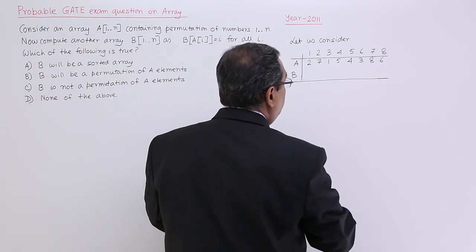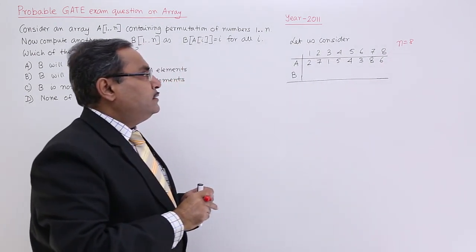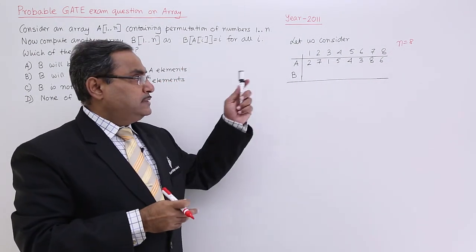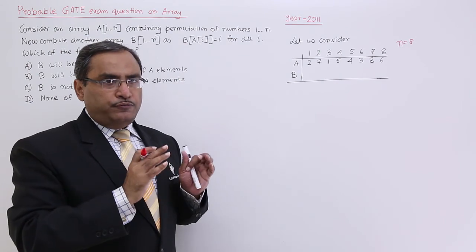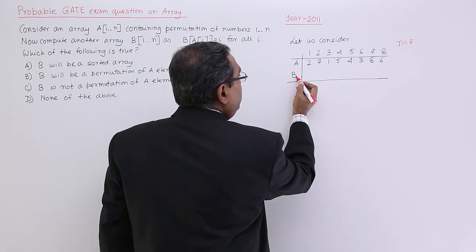Let us suppose I have considered n is equal to 8. So, A array will be having values ranging from 1 to 8. I have placed them arbitrarily. Now, I am going to fill up the array B using this particular logic. In array B,